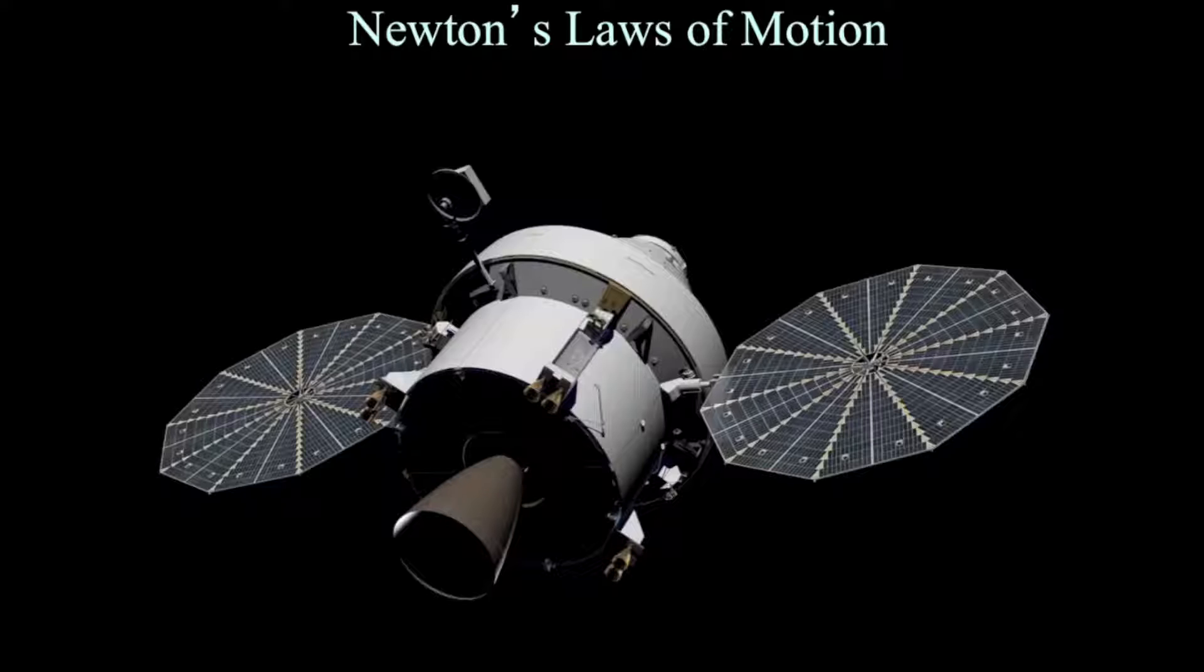For example, spacecraft, like the one pictured here, can travel through space at tens of thousands of miles per hour, even though they may not have a thruster firing at that moment.